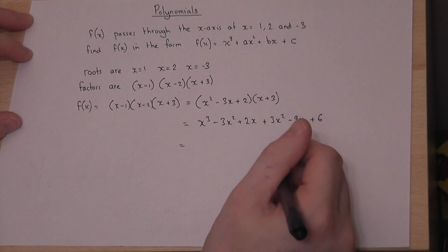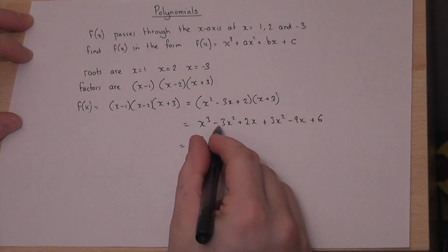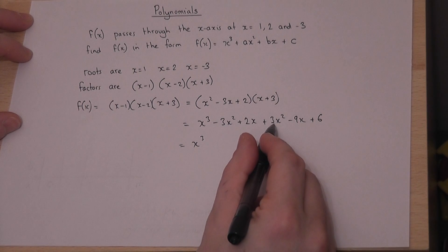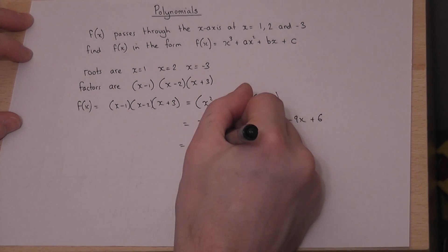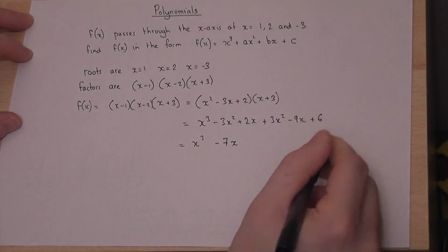Then collect together like terms. -3 plus 3, they cancel off, there's no x² terms. 2x take away 9x is -7x + 6.